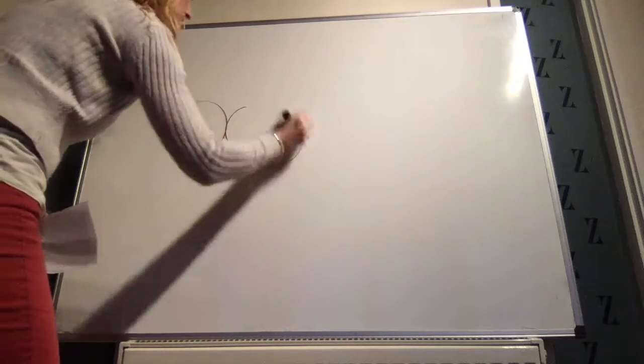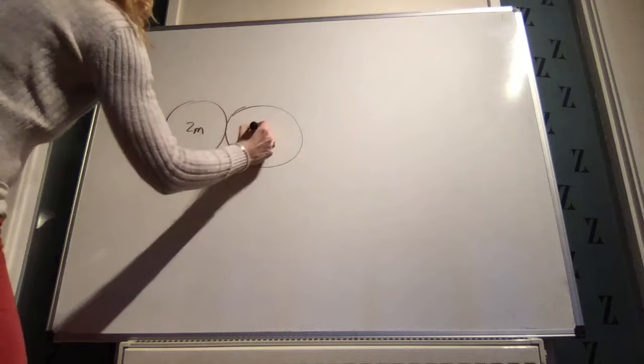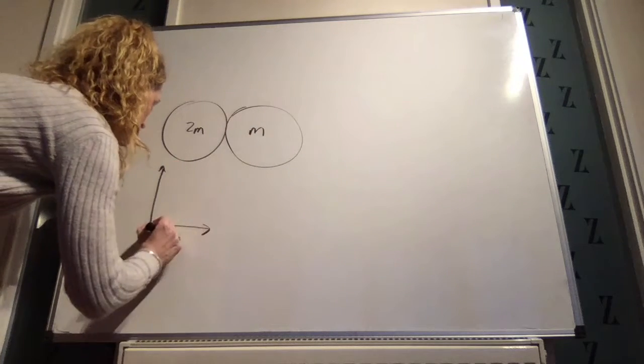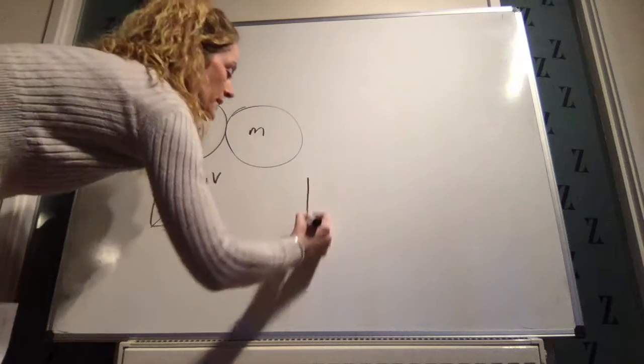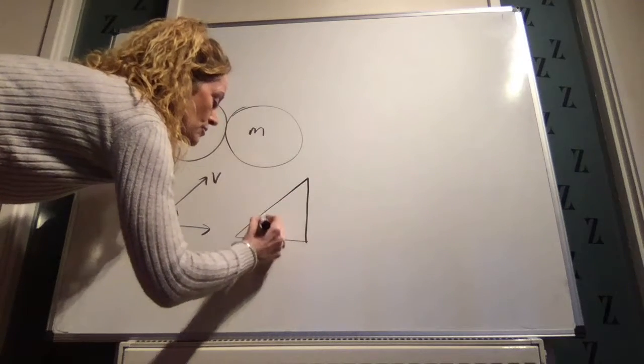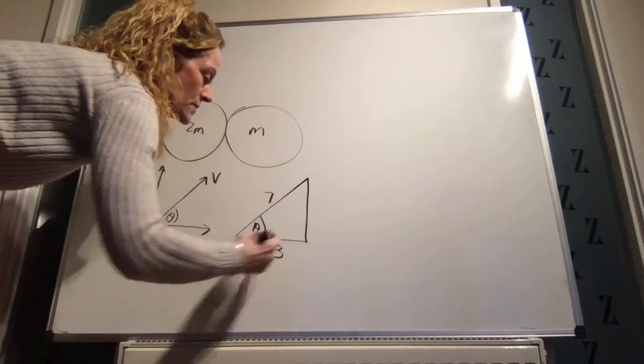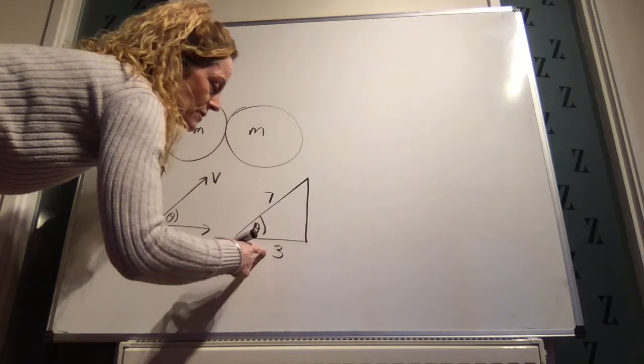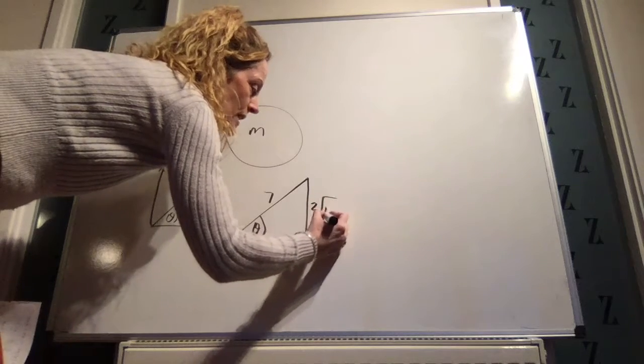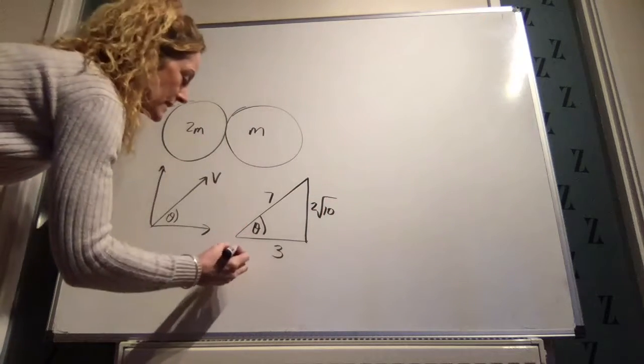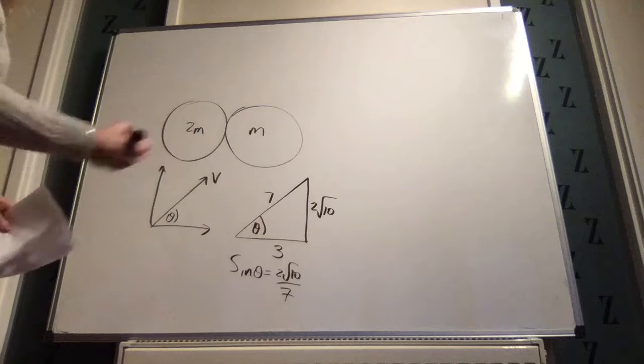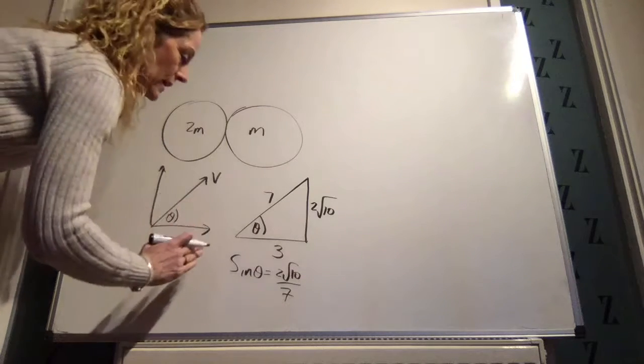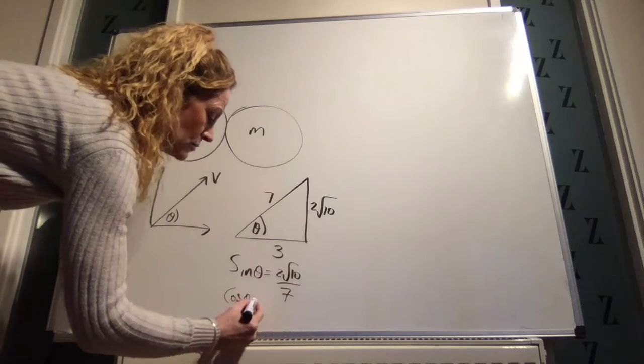I think we will use that in the second bit. So the second bit, basically, you have a sphere and another sphere. This one is of mass 2m and this one is of mass m. This one is travelling with the velocity v and at an angle theta. But they told us that the cosine of theta is 3 over 7. So this side must be the square root of 7 squared minus 3 squared, which is 2 root 10.